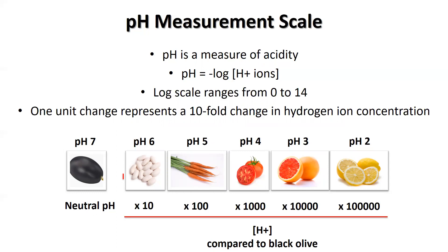A pH of 7 on that pH scale is considered neutral. pH values that are below 7 are acidic, and pH values above 7 are considered basic or alkaline. In this example, the pH of a canned black olive is 7, whereas the pH of the lemon is 2. This means that the lemon has 100,000 times more free hydrogen ions or acidity compared to the black olive.